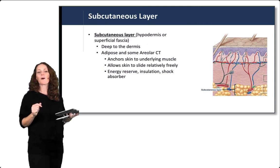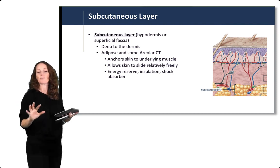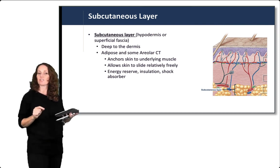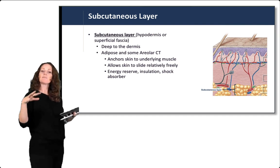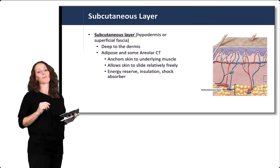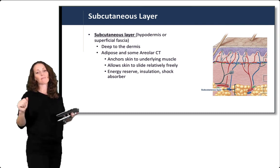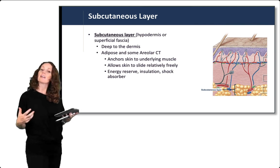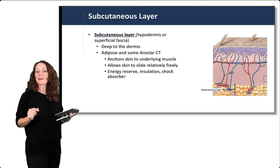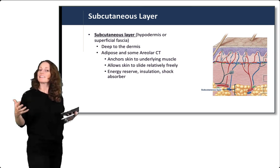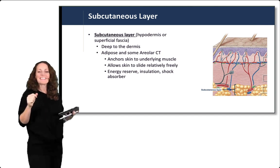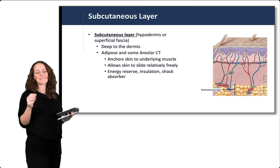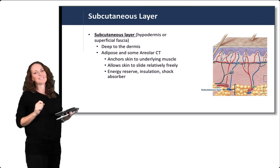The subcutaneous layer, also called the hypodermis, lies deep to the dermis and is composed mostly of adipose tissue with some areolar connective tissue. It anchors the skin to the underlying muscle below and allows the skin to slide relatively freely on the muscle surface. This adipose tissue provides energy reserve, insulation, and shock absorption. It also turns out to be a convenient location for subcutaneous injections — where you lift the skin to access that fat layer before reaching the muscle.